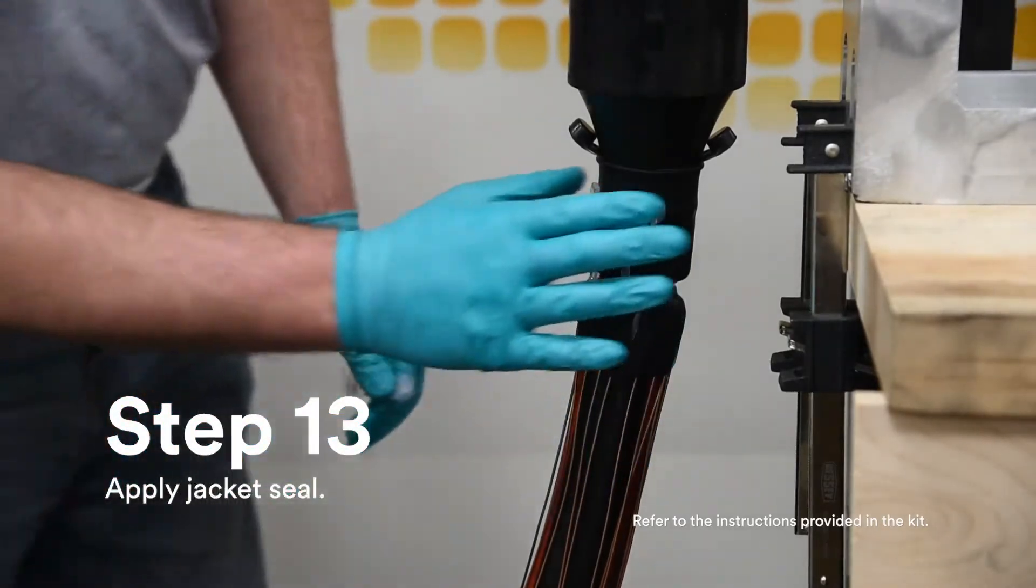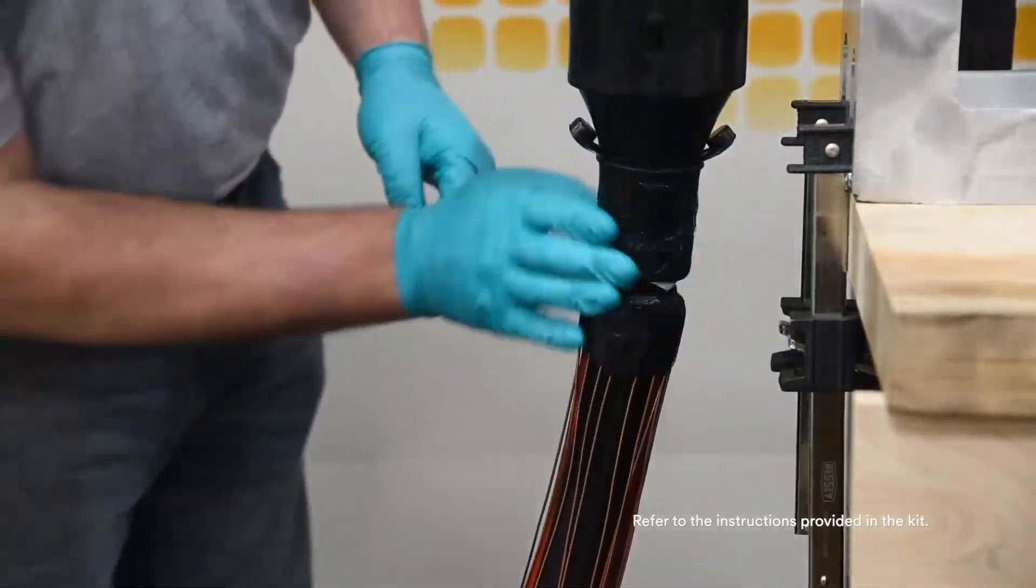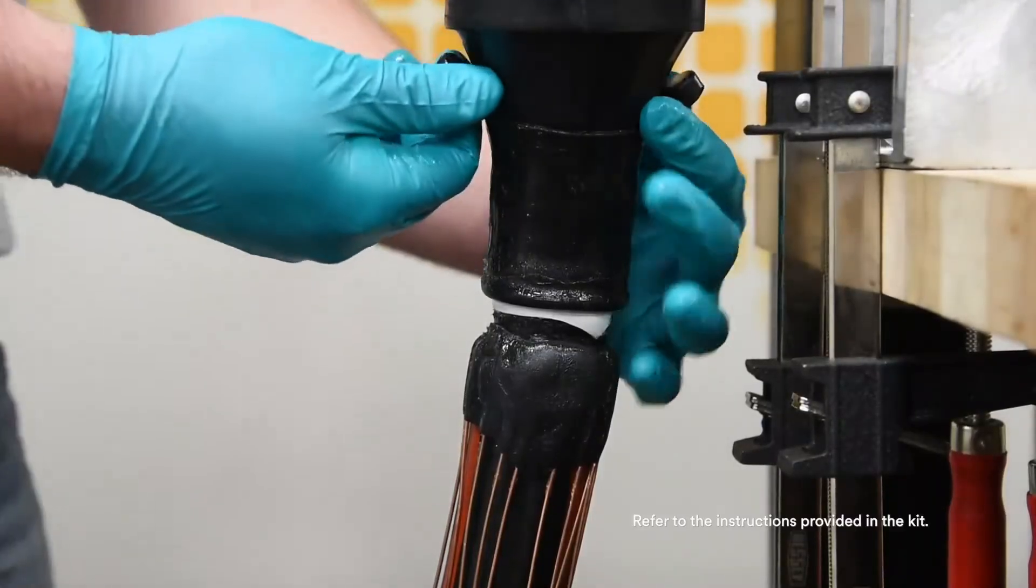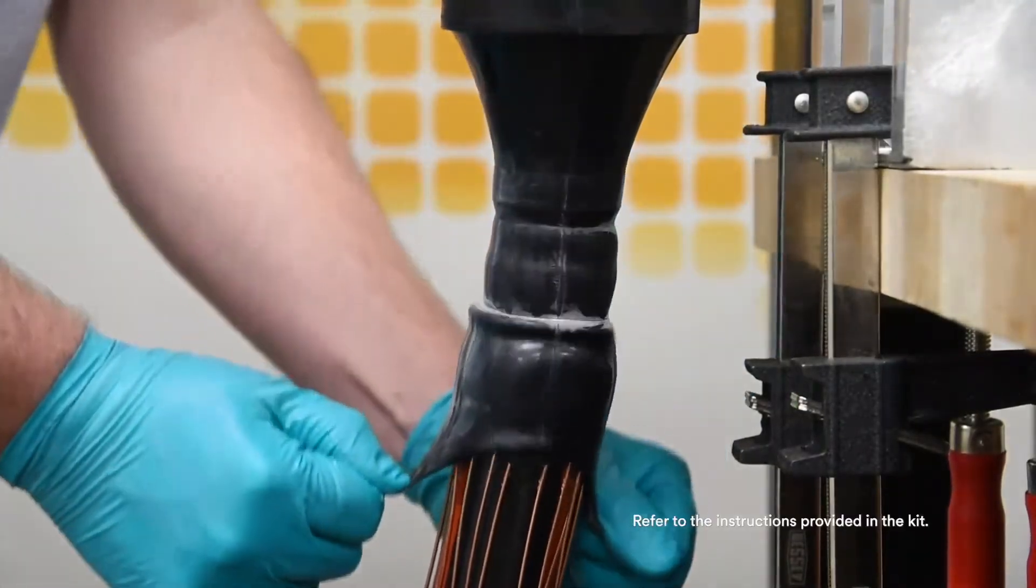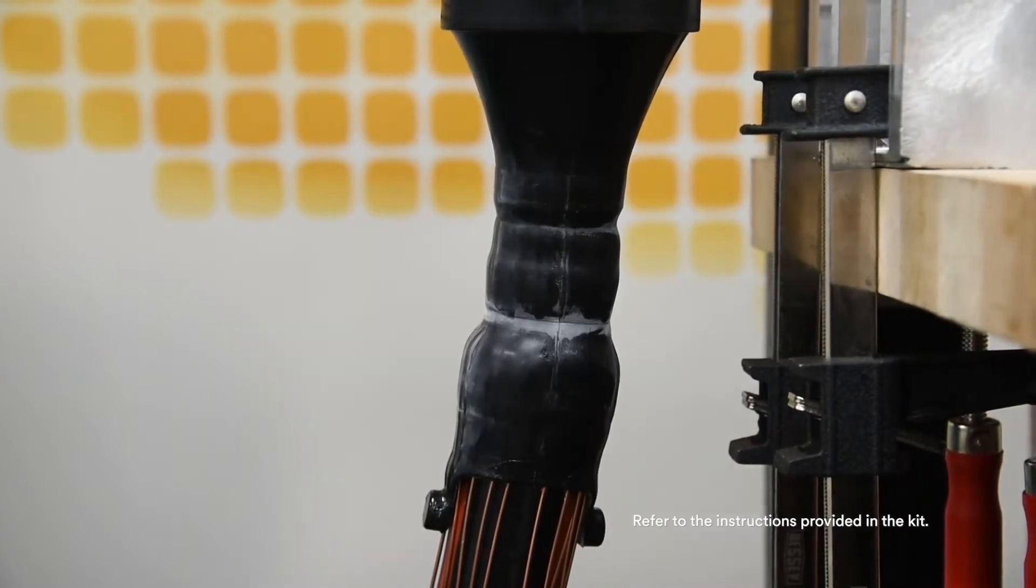Apply grease over mastic and folded back rubber to assist in deploying jacket seal. Grab the pull tabs and pull out and down to completely deploy the jacket seal over the sealing mastic. Ensure the sealing mastic is not dislodged when unfolding the jacket seal.